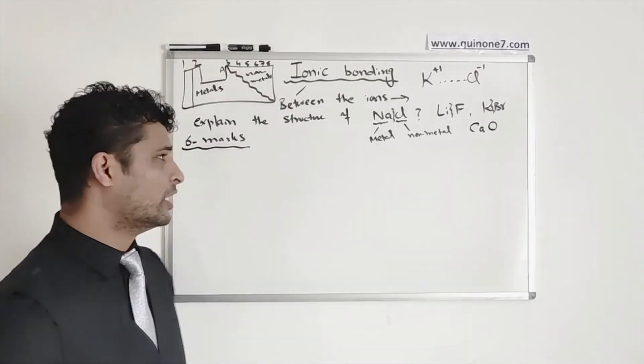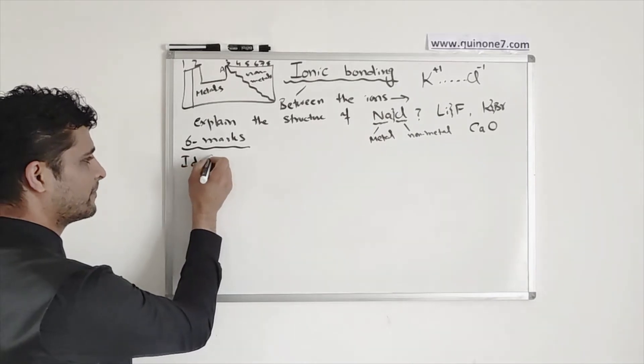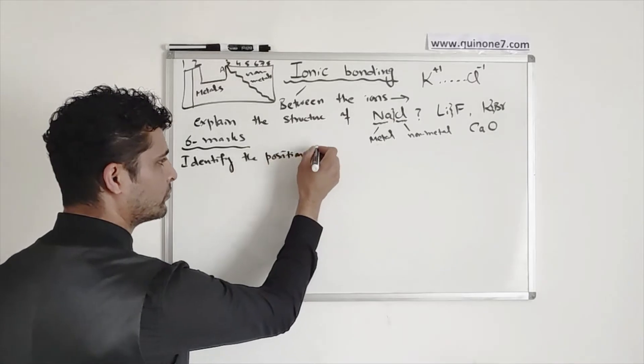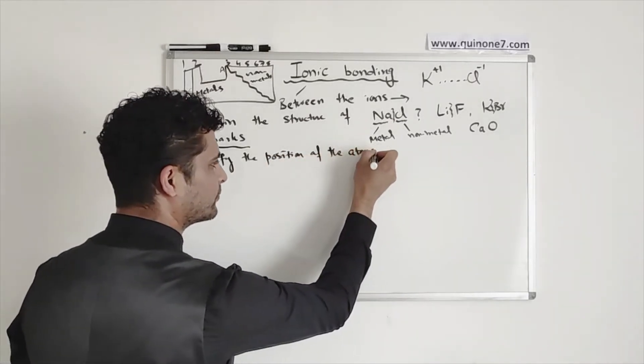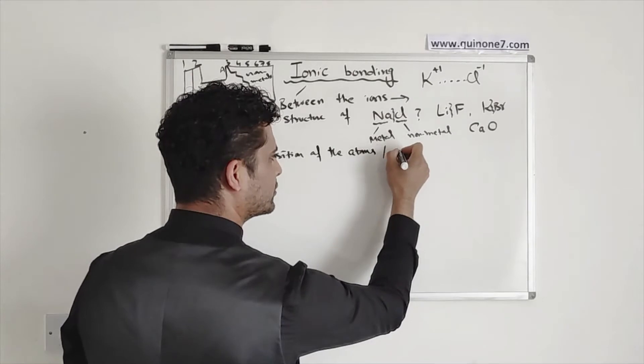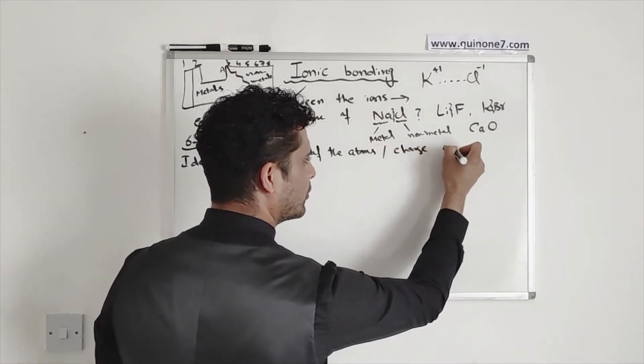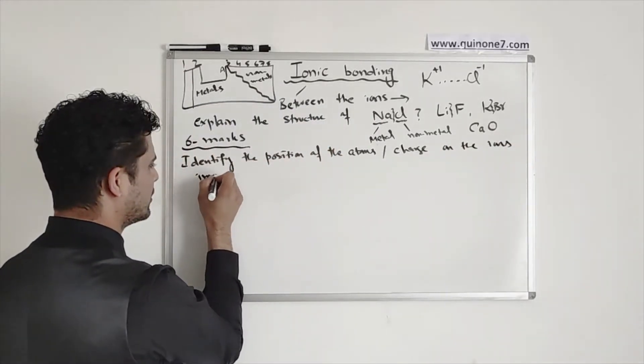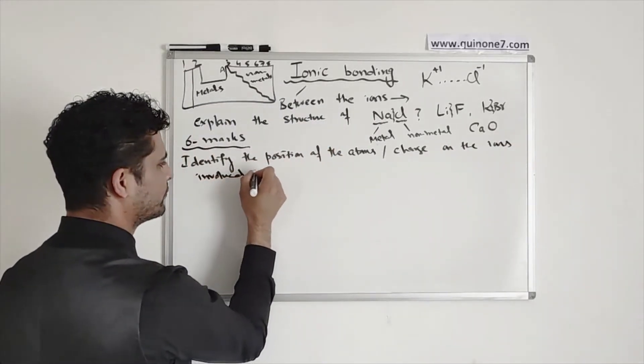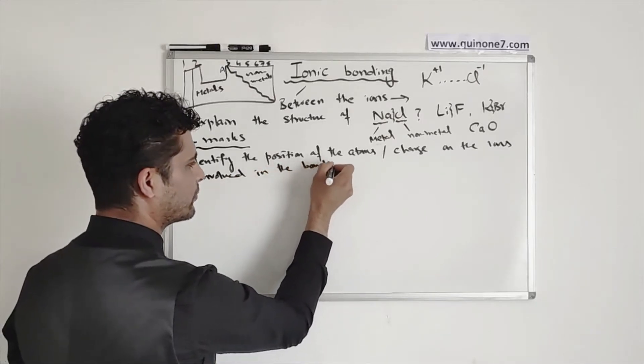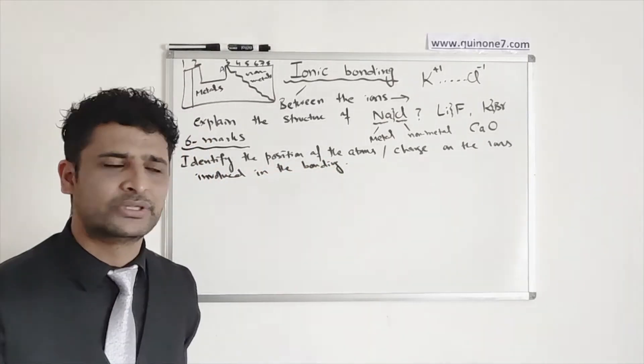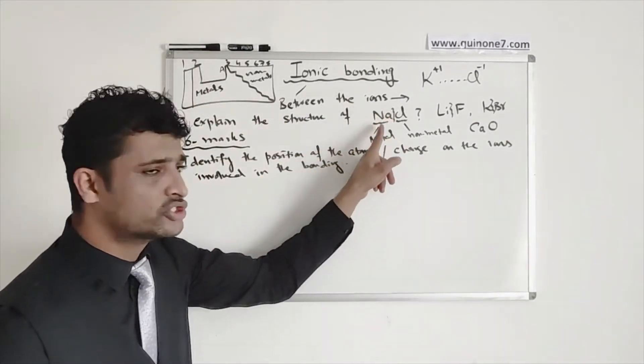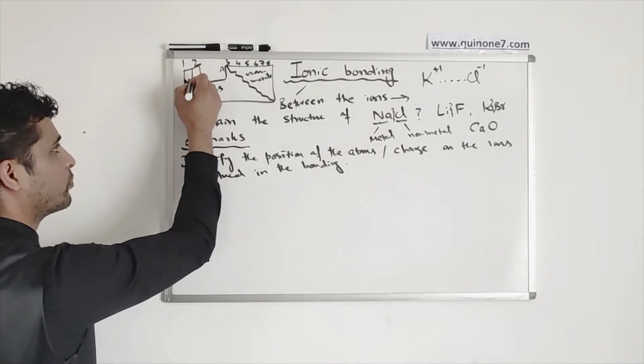All you have to do is, first of all, identify the position of the atoms or the charge on the ions involved in the bonding. That's the first thing. How are you going to do that? You look at the name, you go back onto the periodic table. From here, I can see sodium, Na, is actually in group 1.